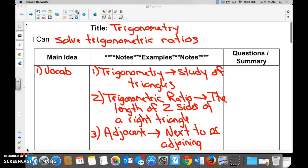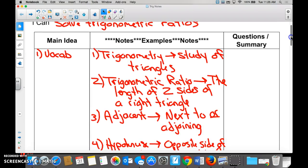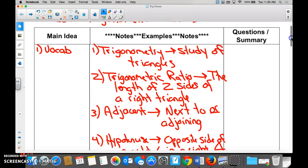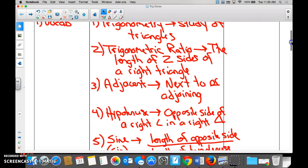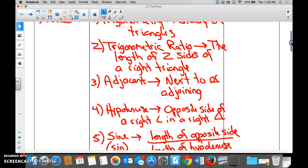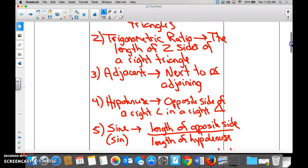Alright, so what is trigonometry called? The study of triangles. Alright, what is a trigonometric ratio, Aiden? The length of two sides of a right triangle. Of a right triangle. Right triangle.